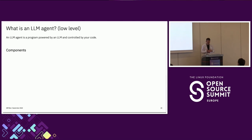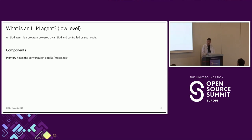We can think of an agent as a program that is powered by an LLM and is controlled by our code — that's the definition I came up with, since there is no standard one, so feel free to discuss it. If you are going to create such an agent from scratch you need a few components. The first one is memory — a data structure that holds the conversation details, typically a simple array that holds strings or objects with a role and content.